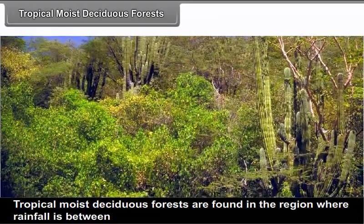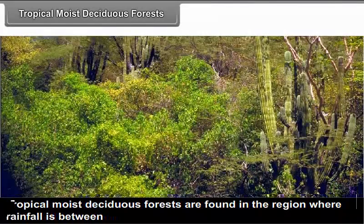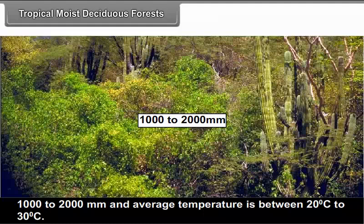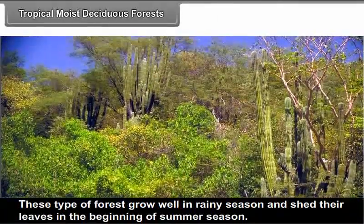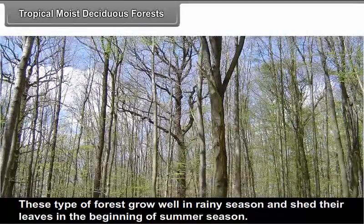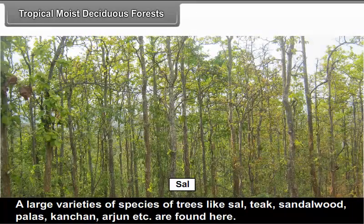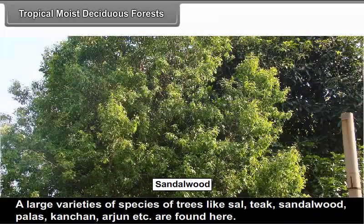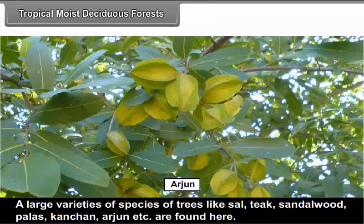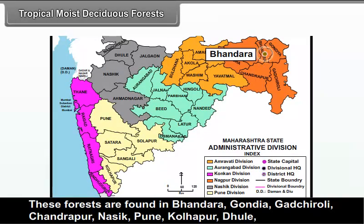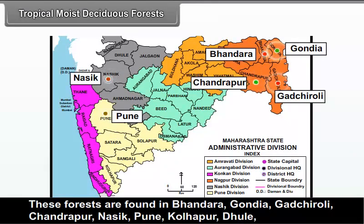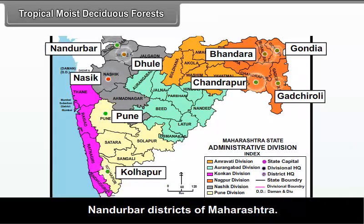Tropical Moist Deciduous Forests: These forests are found in regions where rainfall is between 1000 to 2000 mm and the average temperature is between 20°C to 30°C. These types of forests grow well in the rainy season and shed their leaves at the beginning of the summer season. They grow as tall as 30 to 40 meters. A large variety of tree species like Sal, Teak, Sandalwood, Paras, Kanchan, Arjun, etc. are found here. These forests are found in Bhandara, Gondiya, Gadchiroli, Chandrapur, Nashik, Pune, Kolhapur, Dhule and Nandurbar districts of Maharashtra.